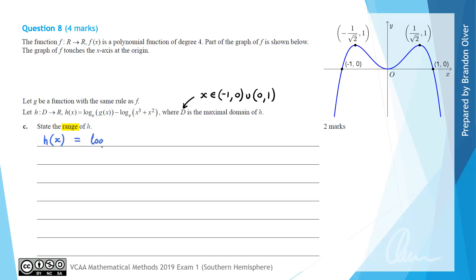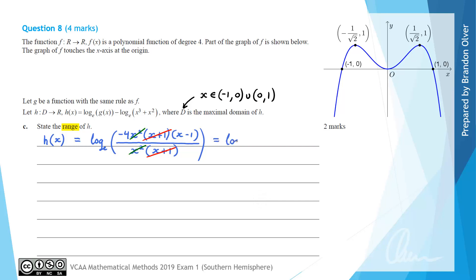So h of x equals log e of g of x minus log e of (x cubed plus x squared). Using the log law that when we subtract two logs with the same base we can divide the inner functions, g of x is minus 4x squared times (x + 1)(x − 1) divided by x squared(x + 1). The x plus 1 factors and the x squared factors cancel, so the rule simplifies to log e of minus 4(x − 1).